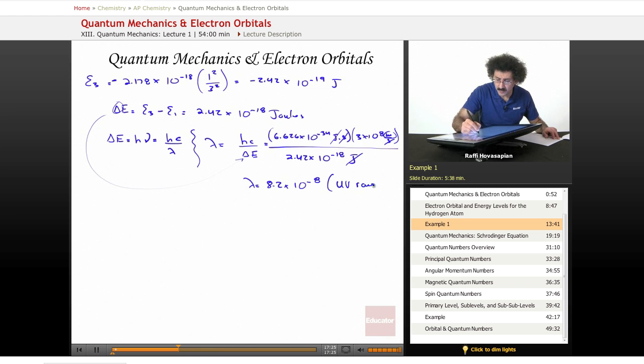This is in the ultraviolet range. This means that if I want to excite a hydrogen electron, the electron in a hydrogen atom, from level one ground state to a level three, that means I have to hit it with some ultraviolet light. Now, not just any ultraviolet light. Ultraviolet has a range. Specifically, I have to hit it with 8.2 times 10 to the negative 8. Light that has a wavelength of that.